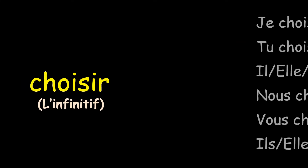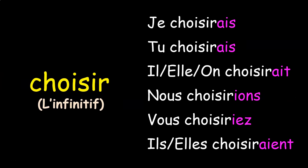It's the exact same process with -IR verbs such as choisir. You take the infinitive and add the conditional ending depending on the subject: je choisirais, tu choisirais, il/elle/on choisirait, nous choisirions, vous choisiriez, and ils/elles choisiraient. The stem is always the same — choisir — and then depending on the subject, you add the appropriate conditional ending.